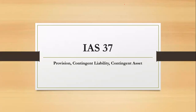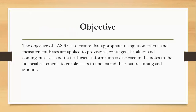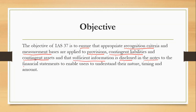This lecture is about IAS 37. IAS 37 deals with provisions, contingent liabilities, and contingent assets. The objective of IAS 37 is to ensure that appropriate recognition criteria and measurement basis are applied to provisions, contingent liabilities, and contingent assets, and that sufficient information is disclosed in the notes to the financial statement, in order to enable users to understand their nature, timing, and amount.